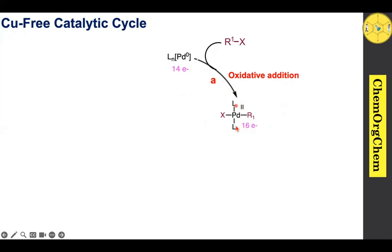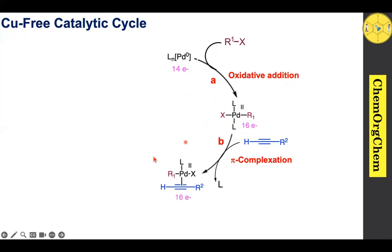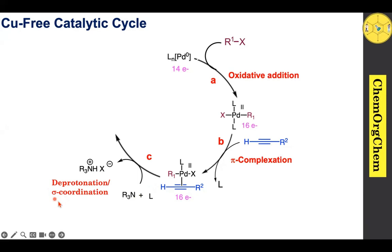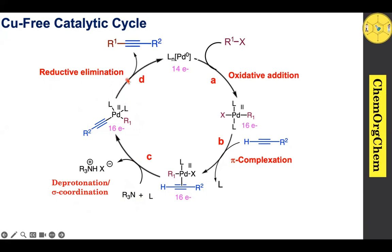This complex then interacts with the alkyne, undergoing π-complexation followed by dissociation of one ligand. The resulting complex undergoes deprotonation by an organic base and sigma coordination, with addition of a ligand, to produce a new palladium complex. This complex undergoes reductive elimination to produce the carbon-carbon coupling product.